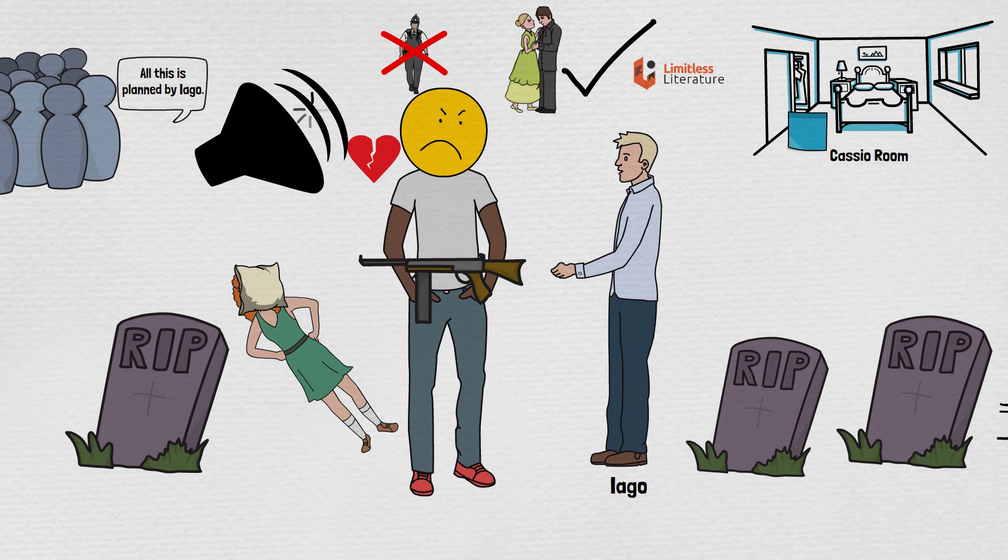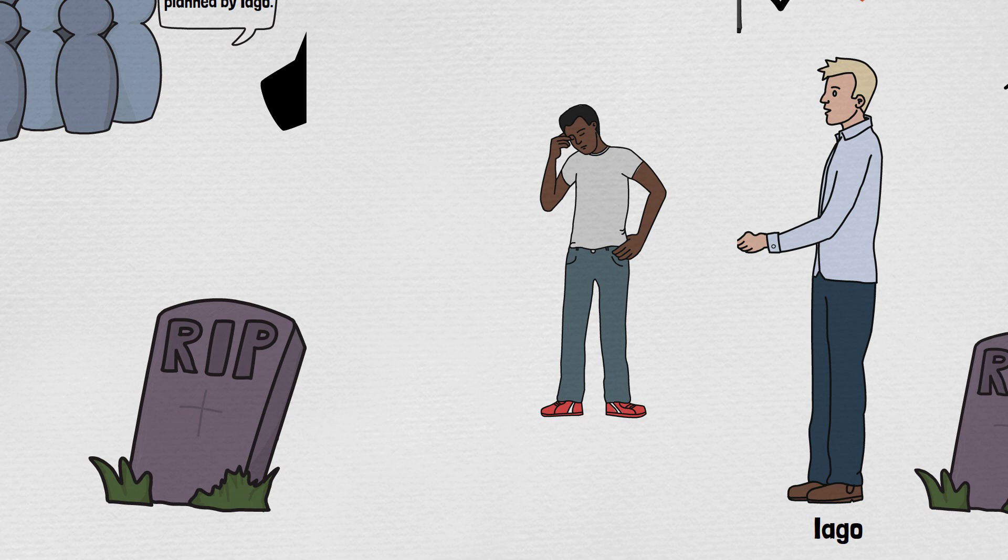At the end of the play out of guilt Othello kills himself. So the tragedy happens and no one is happy at the end of this play. And with this we come to the end of this video.